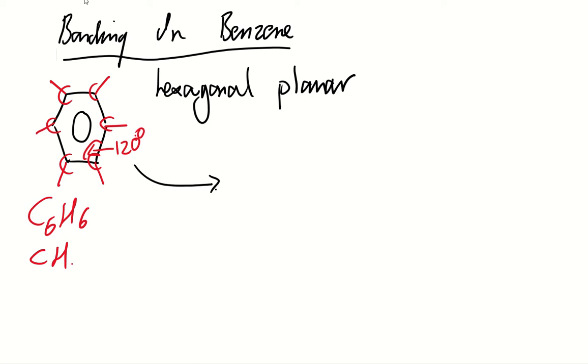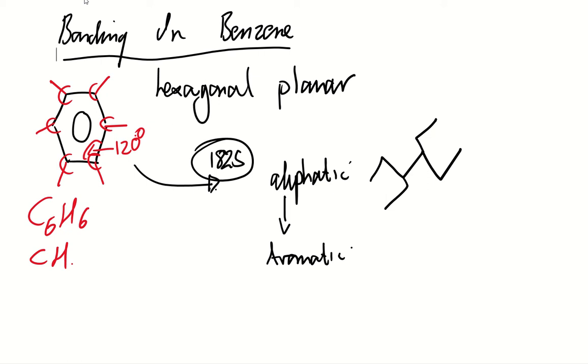Originally, benzene was discovered way back in about 1825 by a guy called Michael Faraday. They had great difficulty back in that time trying to work out the structure of benzene. Anything up until then in chemistry had been aliphatic chemistry—the sort of chemistry you've studied so far with chains and branches. This was the first time they'd come across a carbon structure which behaved in a cyclical fashion, so instead of aliphatic, this is now what we call aromatic chemistry.